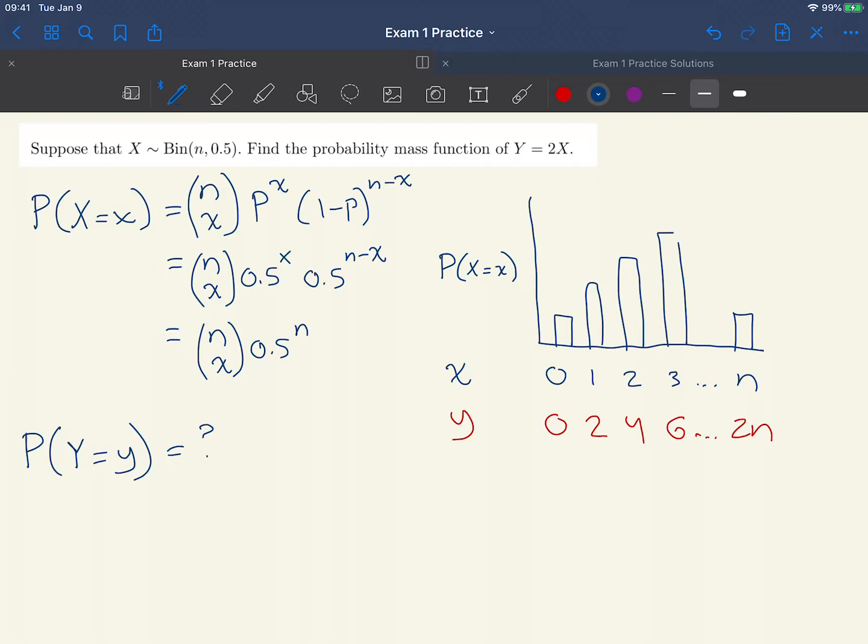Let's think about what that means for the probability mass function of Y. The probability that X equals zero is the same as the probability that Y equals 0. The probability that X equals 1 is the same as the probability that Y equals 2. And the probability that X equals 2 is the same as the probability that Y equals 4.